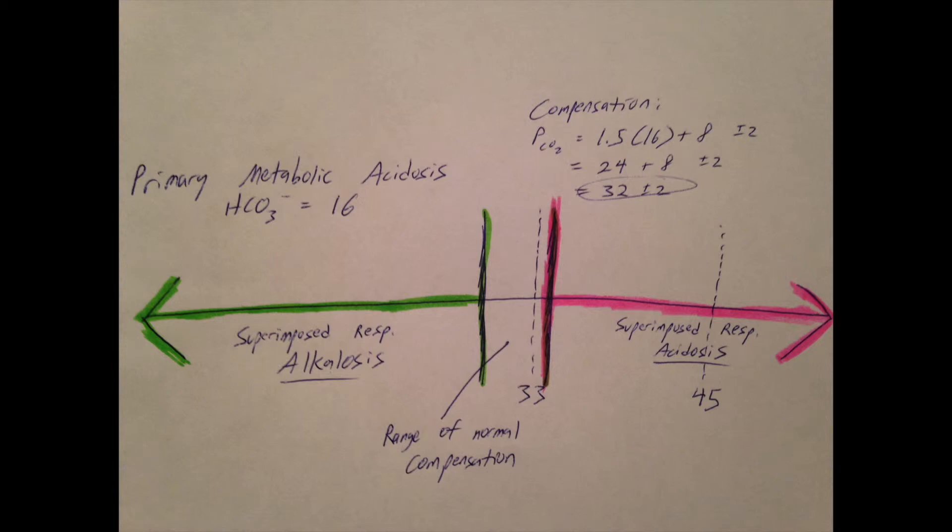1.5 times 16 is 24, which adds 8 to get 32. So that means we'd expect PCO2 to be somewhere between 30 and 34. That's a normal finding in the context of our pathology.